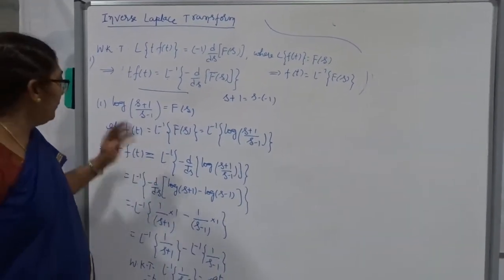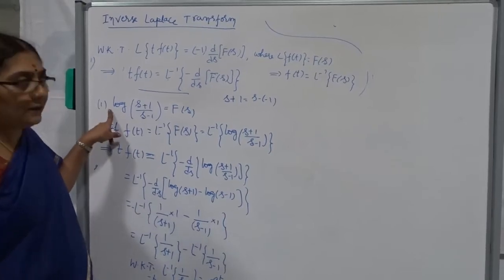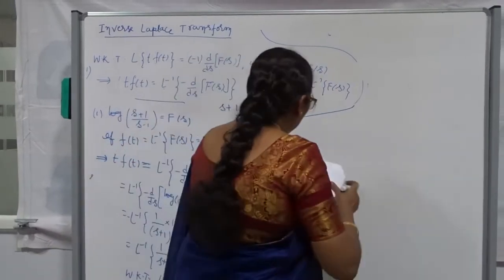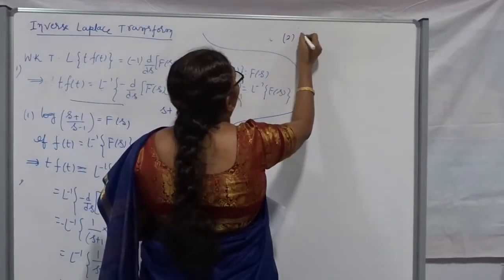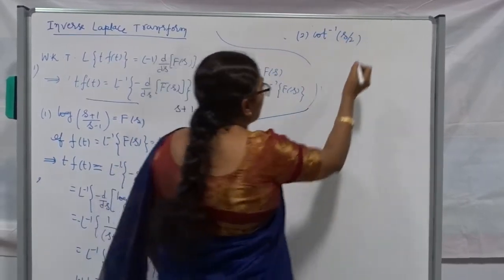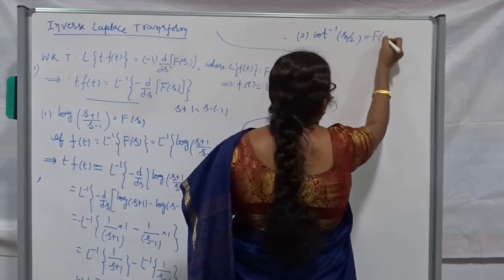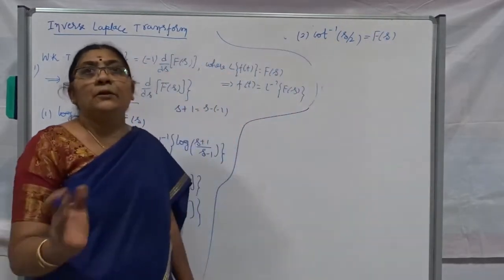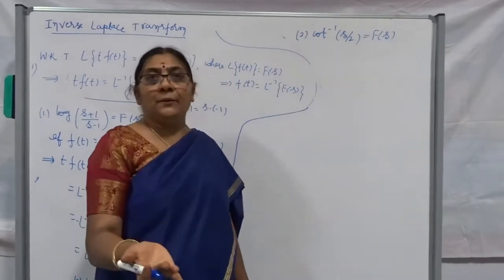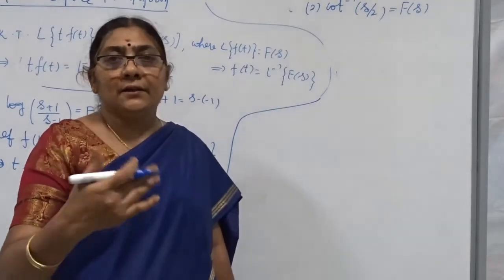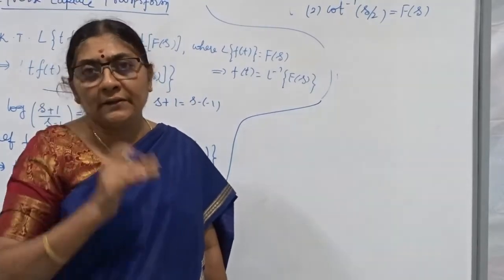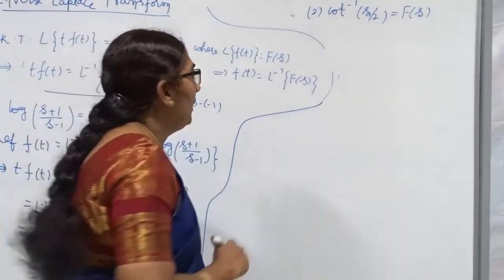Once you differentiate and get the expression into standard form, it is easy to solve compared to the second and third standard results. Now I am going to take another standard function. The second problem is: find the inverse Laplace transform of cot⁻¹(s/2). We don't have any formula directly for the inverse of cot⁻¹(s/2), so I have to differentiate it first to convert it into a fraction.